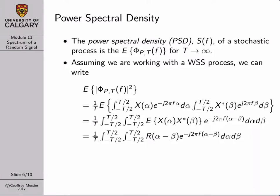Now we have the tools necessary to start dealing with random signals or stochastic processes. Most stochastic processes are typically infinite energy signals, so we would work with their power density. The fundamental problem with stochastic processes is that every time you perform your random experiment, the waveform changes. If we just took the power spectrum of a single realization, the picture would change the next time we got a different realization. What we'd like is a picture of what the waveform looks like in the frequency domain on average—and that's exactly what power spectral density is.